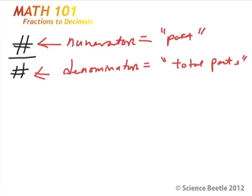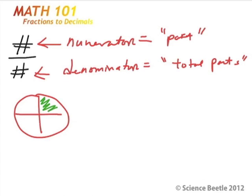We looked at some examples using circles, and I asked you about how much the area shaded in green represents out of the total. We noticed that if we counted up the total number of pieces, we had one, two, three, four. With a total of four pieces and only two boxes filled, the fraction is two-fourths.